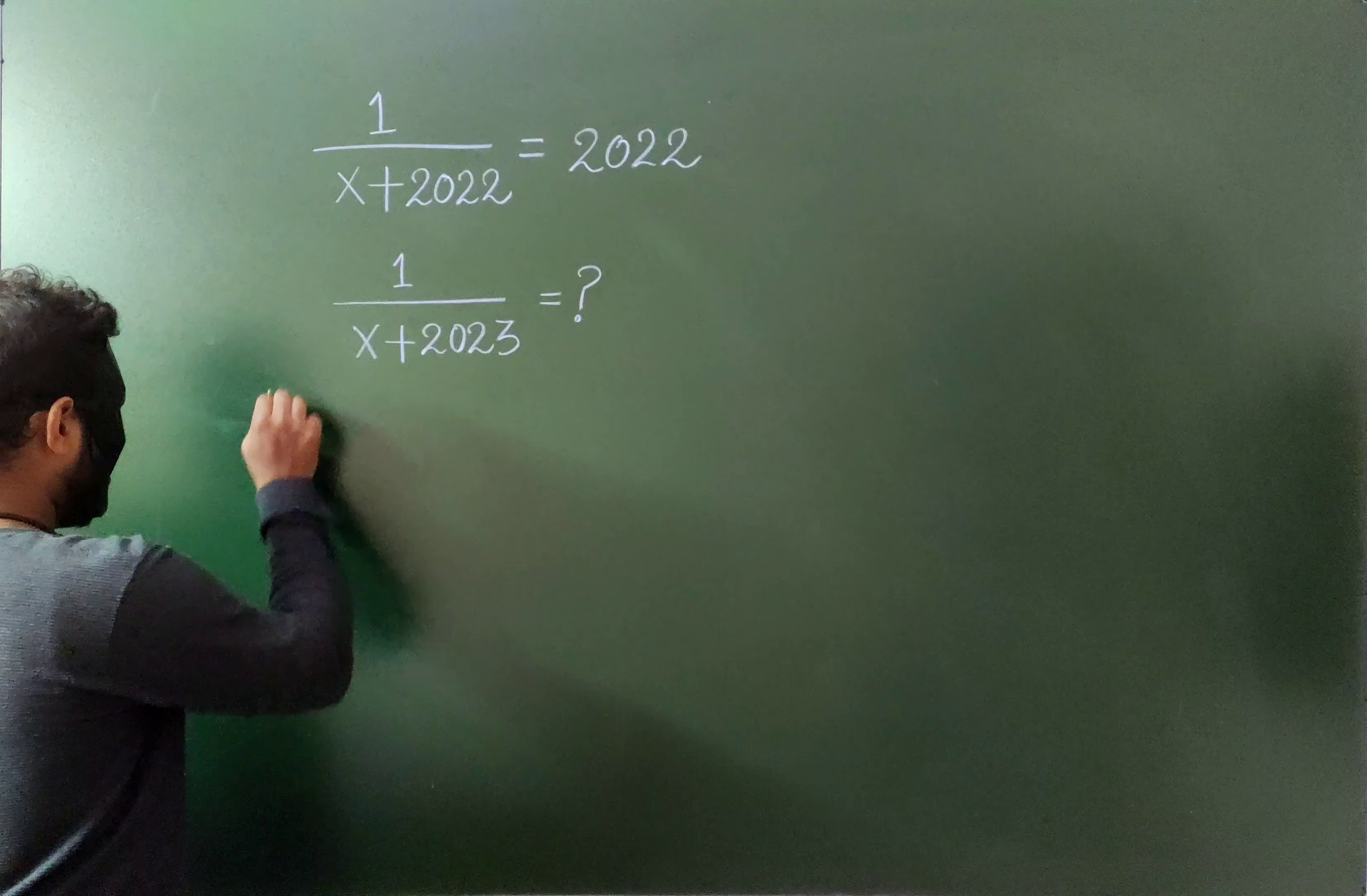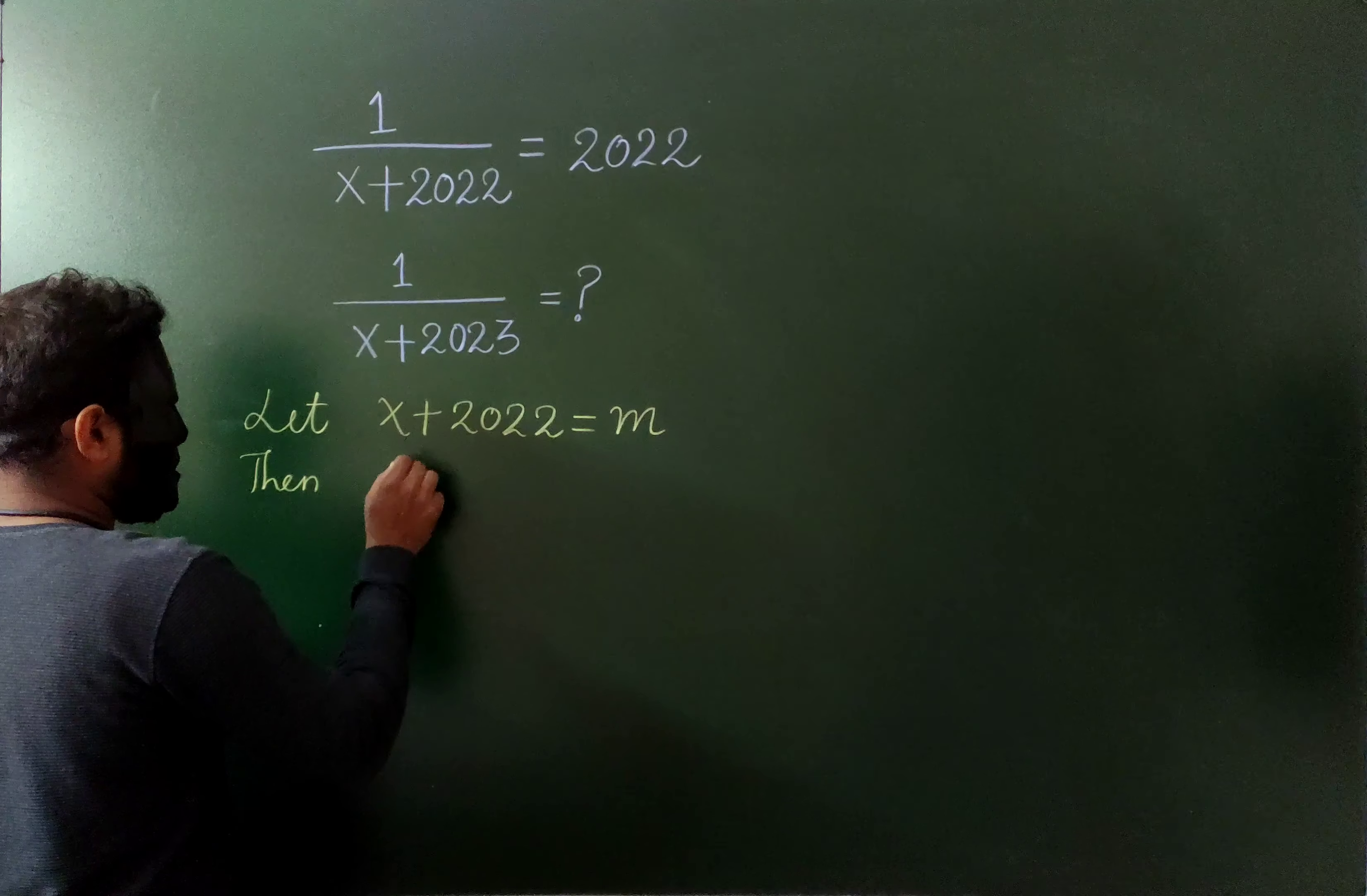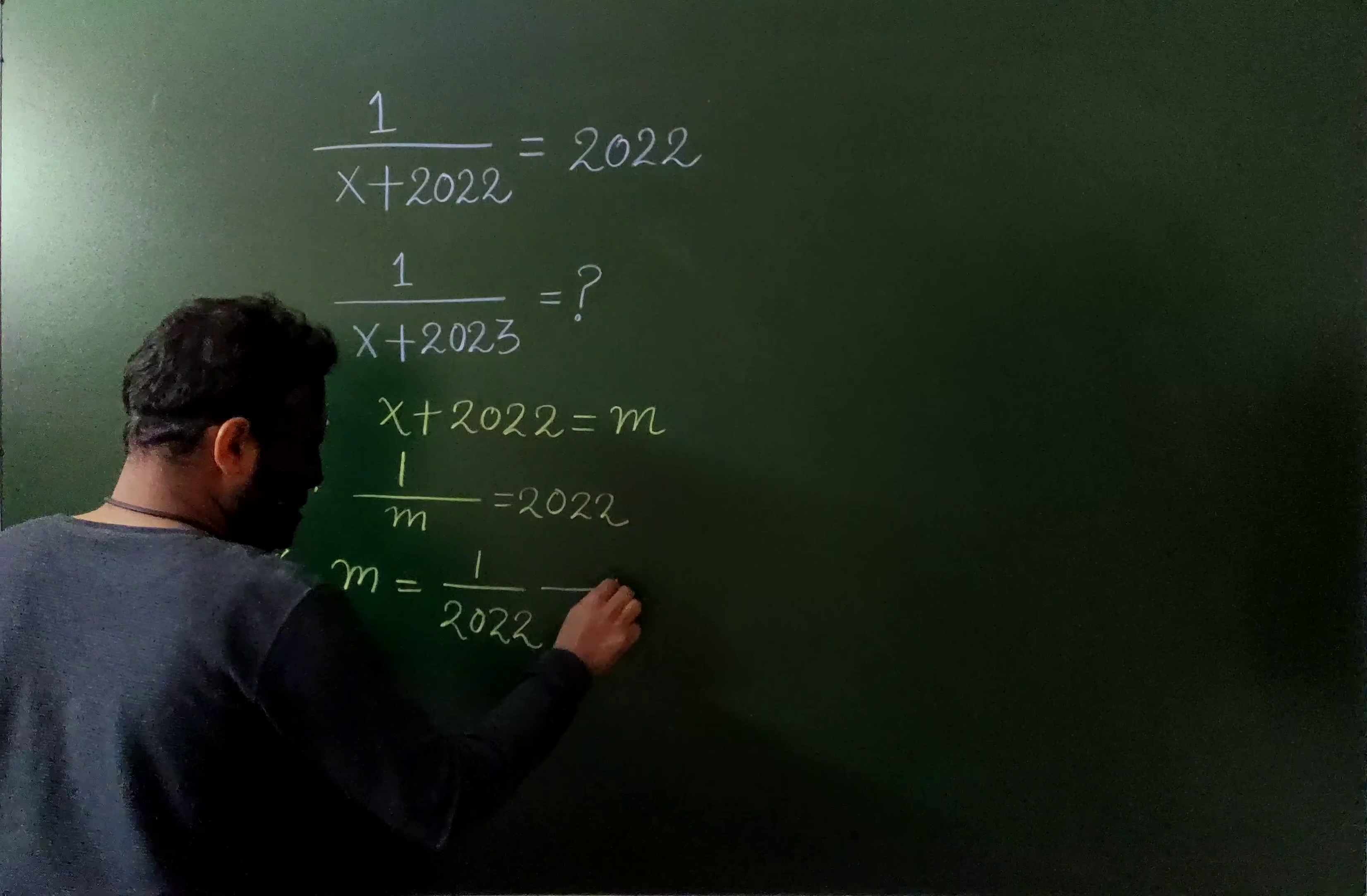So let me take x plus 2022 to be m. Right. And then if you use this, equation 1 becomes 1 by m which equals to 2022. So m equals to 1 by 2022. So first equation done.